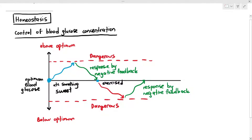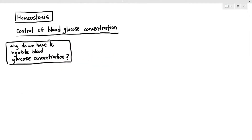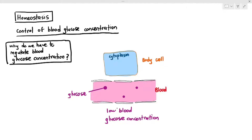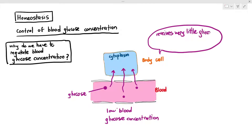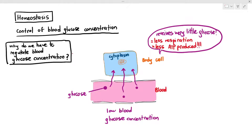This is homeostasis. But before we understand how blood glucose concentration is controlled, we need to explain why we have to regulate it — why it shouldn't be too high or too low. If the blood glucose concentration is low, the cells in your body will receive very little glucose. This is bad because cells need glucose for respiration to produce ATP. If they don't receive glucose, less respiration occurs, less ATP is produced, and this can cause cells to die.